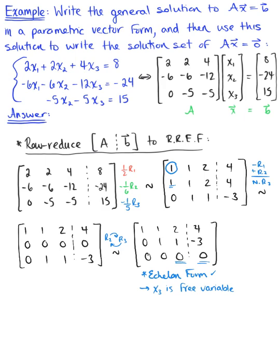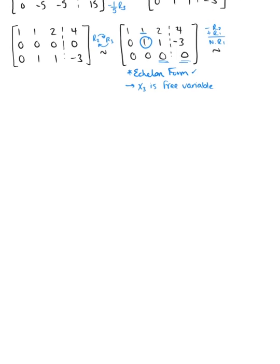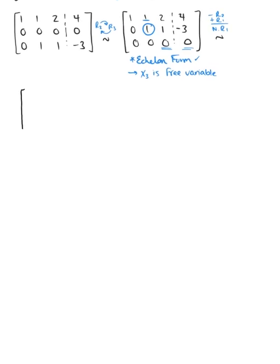Continuing the simplification, we look back at our second pivot position and want to use it to eliminate the entry above it. We do minus the second row plus the first row to get the new first row. This gives us: 0+1=1, -1+1=0, -1+2=1, and 3+4=7. So the new first row is [1, 0, 1 | 7], the second row remains [0, 1, 1 | -3], and the third row is all zeros.